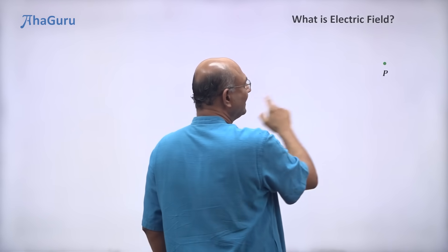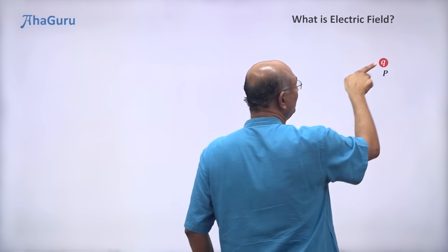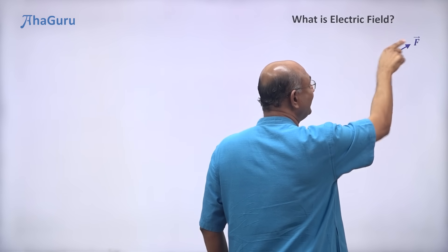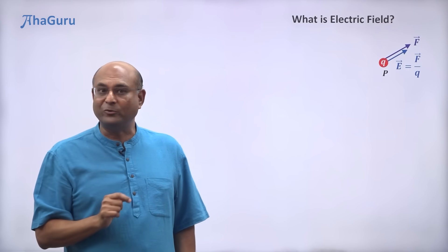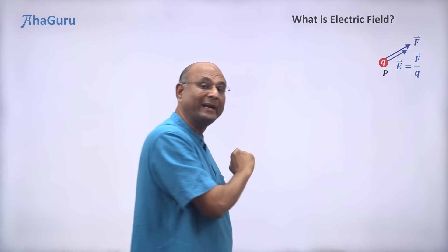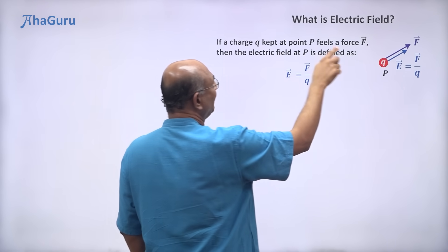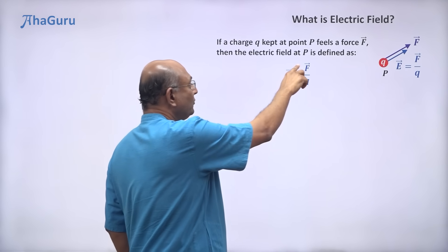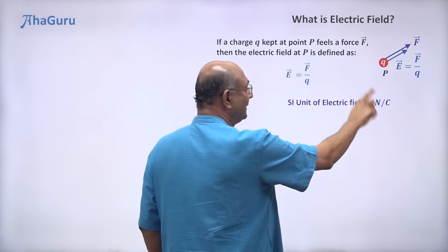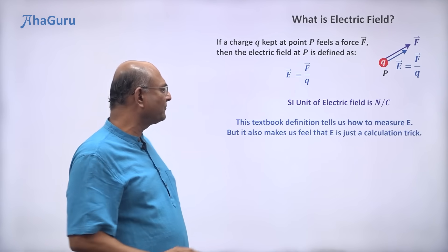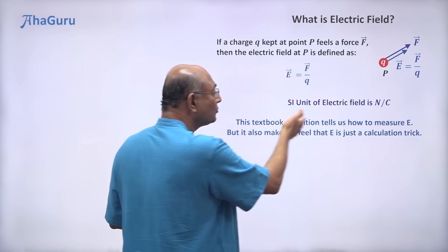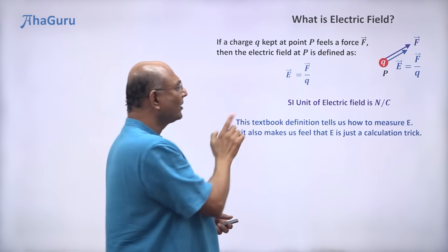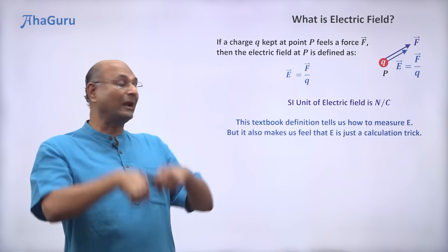Let us now take a point P. If I put a charge Q there and the charge feels a force F, I can say there must be an electric field. How much electric field? Q into E must be F, so the electric field must be F by Q. We can use this idea to define electric field at point P: if a charge Q is kept at point P and it feels a force F, then the electric field at P is defined as F by Q. F is in Newtons, Q is in Coulombs, so the SI unit for electric field will be Newtons per Coulomb.